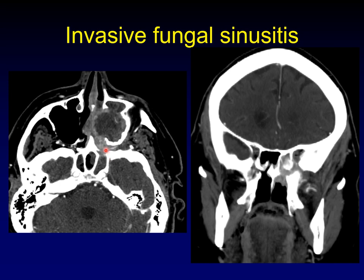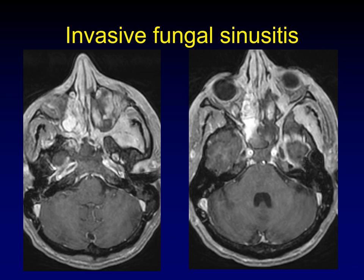Invasive fungal sinusitis looks just like a tumor in so many ways. In more examples, we see complete filling of the pterygopalatine fossa, replacing the normal fat, tracking back along Vidian's nerve and along V2, filling the orbital apex — exactly the sort of appearance you'd expect for perineural spread, but this is an infection.